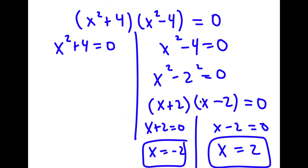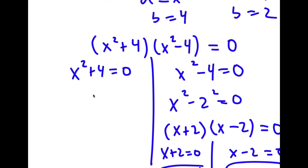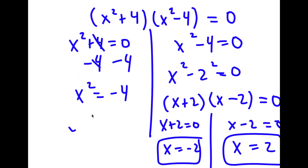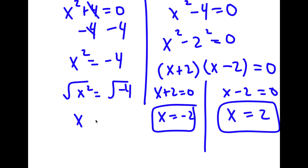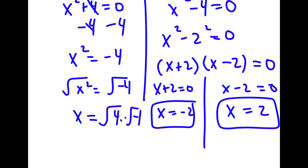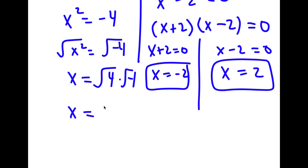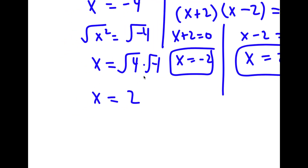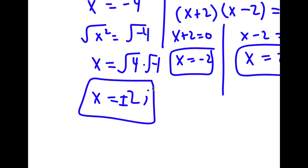For x squared plus 4 equals 0, I'm going to subtract 4 on both sides. These two cancel out and I have x squared is equal to negative 4. Taking the square root on both sides, the square root of x squared is x, and the square root of negative 4 is the square root of 4 times the square root of negative 1. The square root of 4 is 2, and the square root of negative 1 is i. So x is equal to positive or negative 2i. These are another two solutions.